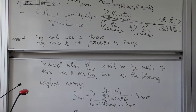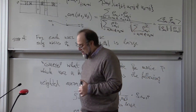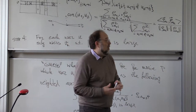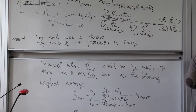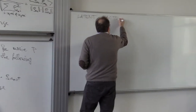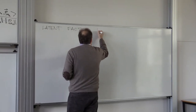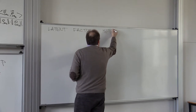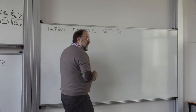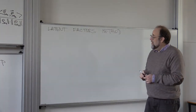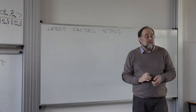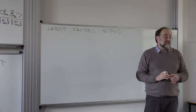So this is one approach. Now, the winning algorithm — the main second component — is something called the latent factor method, or factors method. It tends to outperform the neighborhood method, but its computation is actually much trickier.